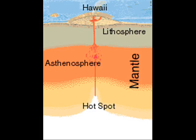Our last type of plate movement is a hot spot. This is when rising lava from the core of the earth comes up through the lower mantle and upper mantle to the crust of the earth.